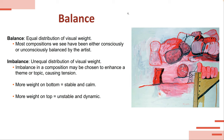Equal distribution of visual weight — most compositions, if not all, are either balanced consciously or unconsciously. As creators, as artists, or even just as humans, we have a tendency to want to balance things visually. So whether we're doing it consciously or unconsciously, most if not all compositions have some sort of balance within them. In this case, we have an example of imbalance — an unequal distribution of visual weight. You can use imbalance in your compositions to create tension, to enhance a theme or topic.